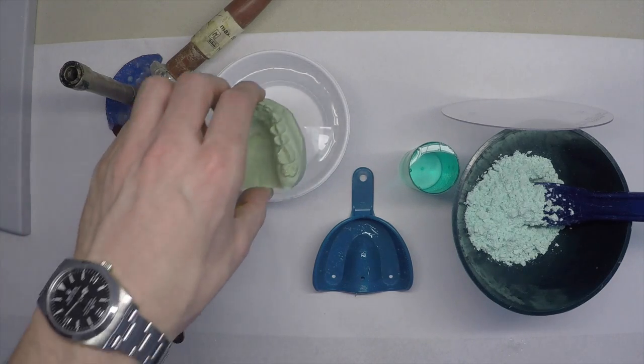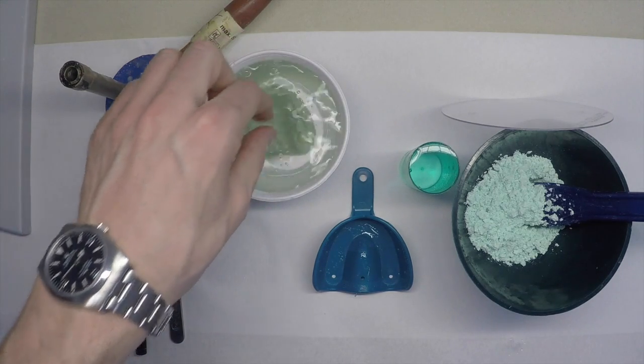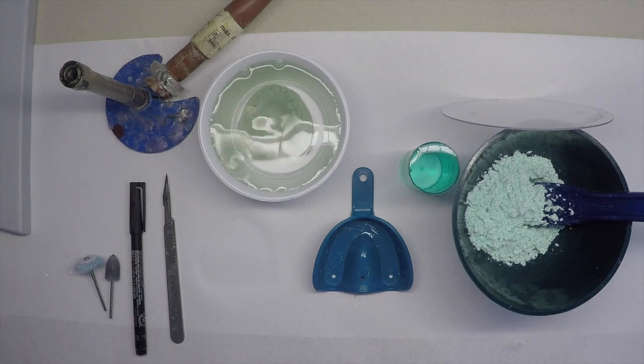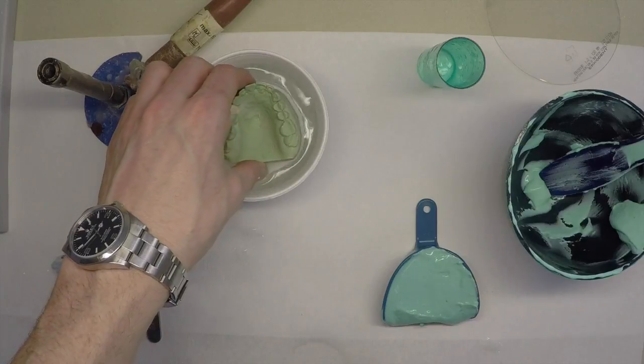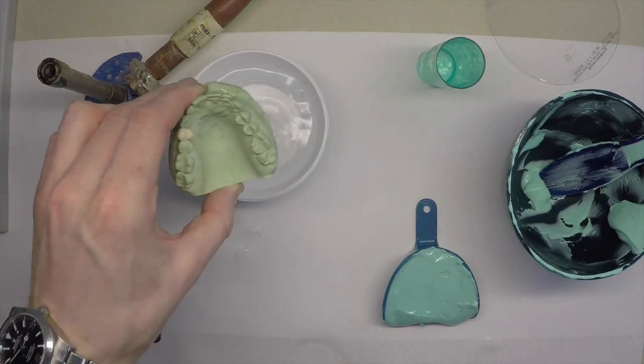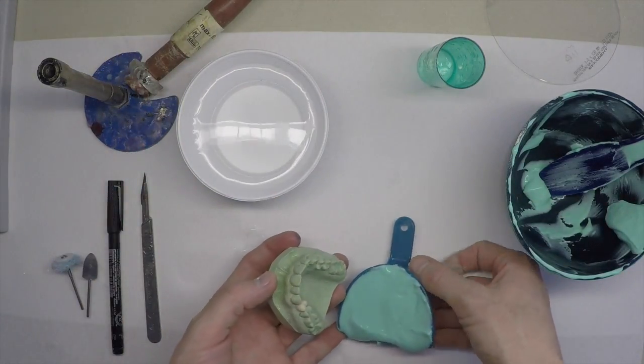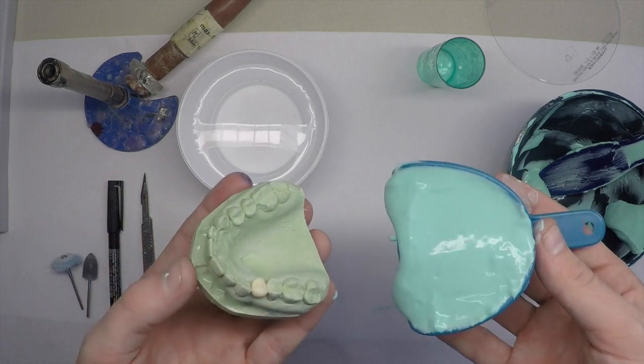First things first, we'll pop the model into the slurry water so the alginate impression doesn't stick to the stone. Once the stone has soaked for 5 minutes, we'll take an alginate impression of our model.